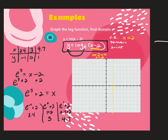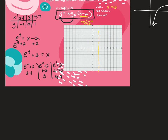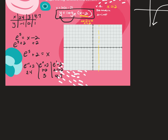Technically the only one we needed the calculator for is that first one. If I didn't have a calculator, I would approximate e to be 3. So 3 to the negative 1 plus 2 is one-third plus 2, which gives 2 and one-third. The difference is only 2.3 to 2.4, so we can approximate it without a calculator.